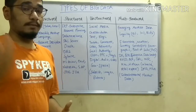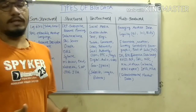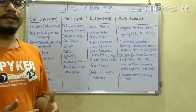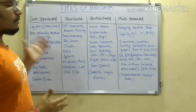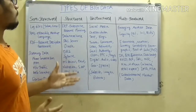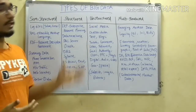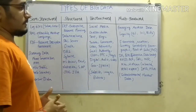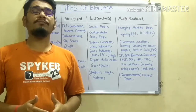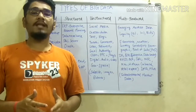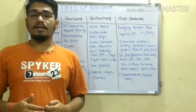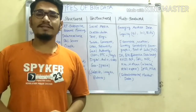So these are the types of big data. There are four main types: semi-structured, structured, unstructured, and multi-structured. I hope you enjoyed this video. If you found it helpful, please hit the like button, and if you haven't subscribed to my channel, please subscribe. Thanks for watching.